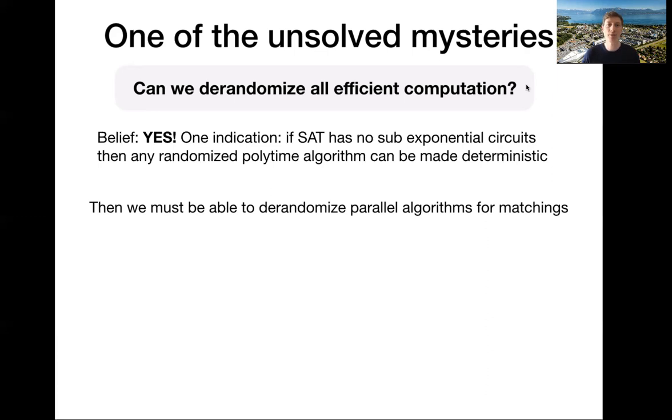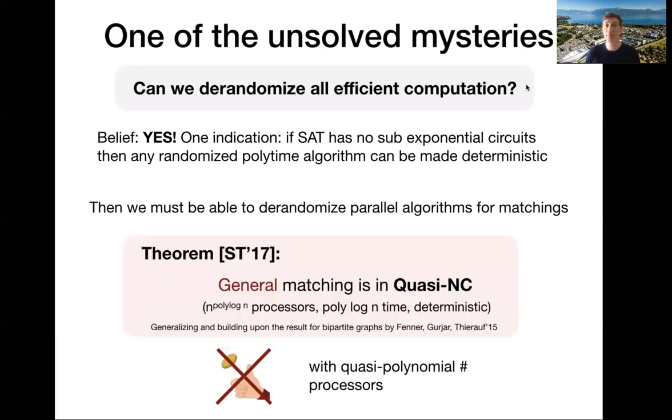And in recent work, we make a step towards this. And particularly, we prove that the general matching problem is in something called quasi-NC. This means that we can solve it in polylogarithmic time, but we use quasi-polynomially many processors instead of polynomial processors. There are many fascinating open questions here that I would love to discuss with you, either through email or once you are at EPFL.